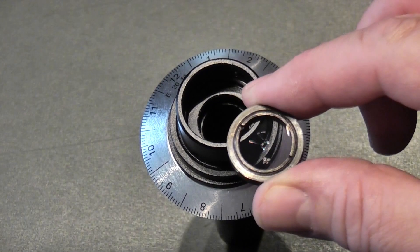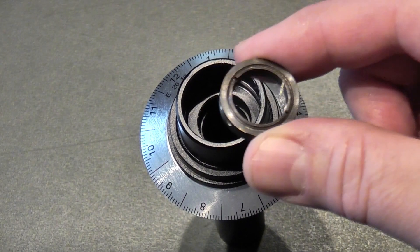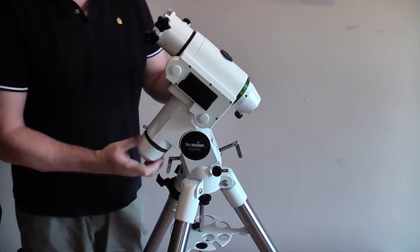This is what the graticule looks like when it's removed. You have to be very careful when you're handling this. The grub screws press against the side of the metal ring to hold the graticule in place.